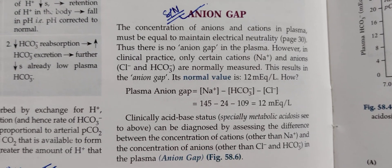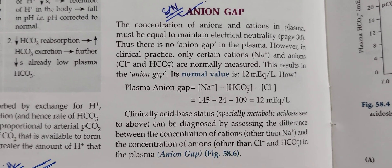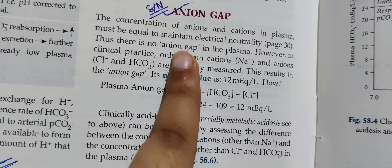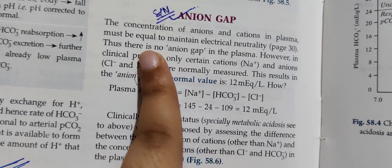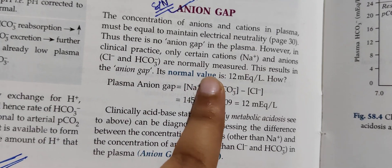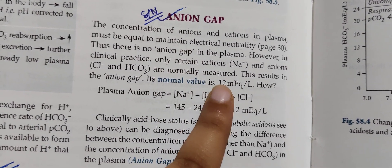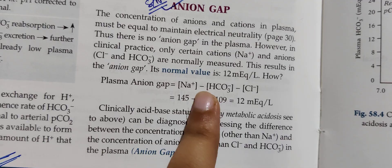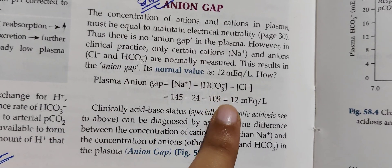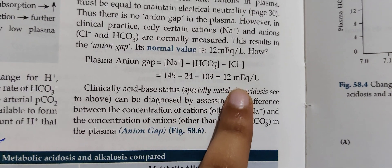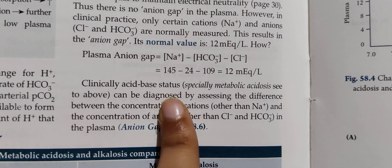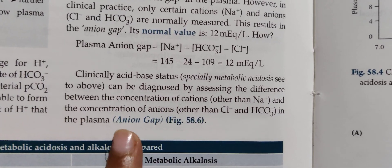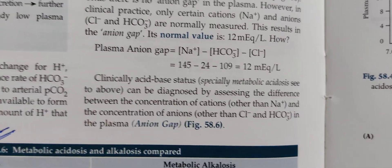The last topic is anion gap. The concentration of anions and cations must be equal to maintain electrical neutrality, so theoretically there should be no gap in the plasma. However, in clinical practice, we measure only sodium as the cation and chloride and bicarbonate as anions. Therefore, there is an anion gap — the measured cation minus measured anions — which is normally 12 mEq/L. Clinically, acid-base status can be assessed by this difference, which is known as the anion gap.